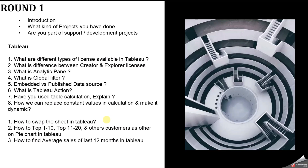The first Tableau question is: what are the different types of licenses available in Tableau? Tableau offers three types of licenses — Creator, Explorer, and Viewer. The next question is the difference between Creator and Explorer license. Creator has all the access: he can publish data sources, create data sources, create dashboards, and has full access to Tableau Server, Tableau Desktop, and Tableau Prep. Explorer has similar roles but with a few limited accesses — for example, Explorer cannot publish the data source.